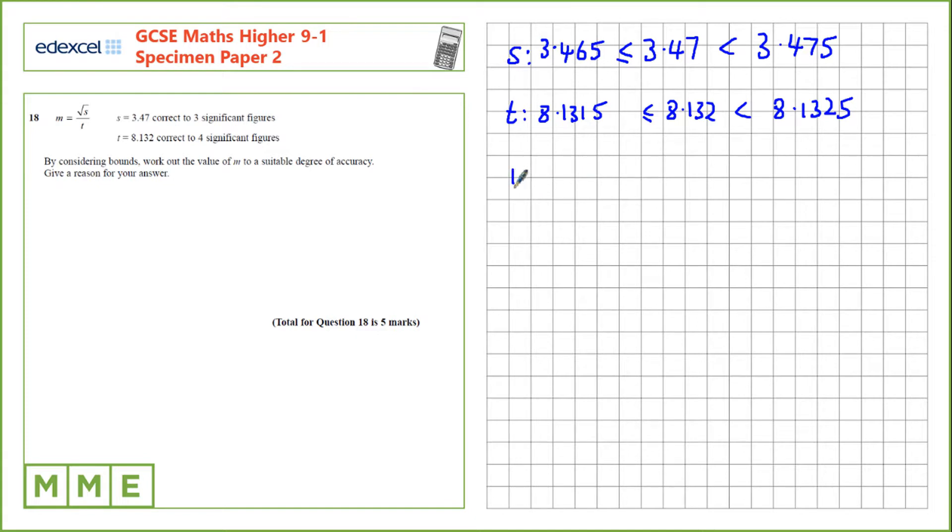Now, let's calculate the upper bound for m. If you want the upper bound of something that's a fraction, you need the largest value on the top and the smallest value on the bottom to create the largest number.